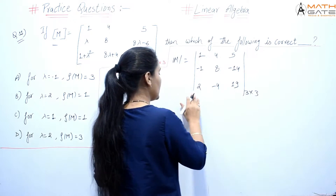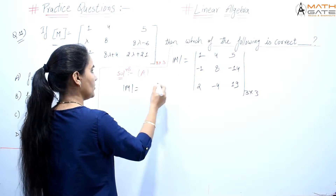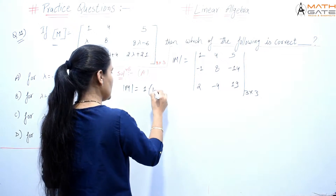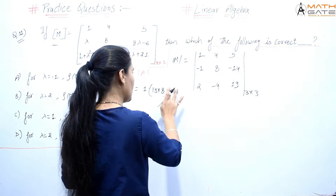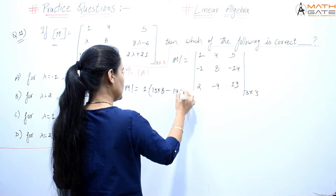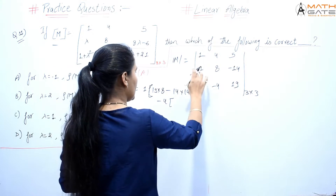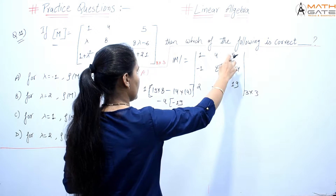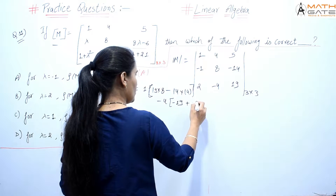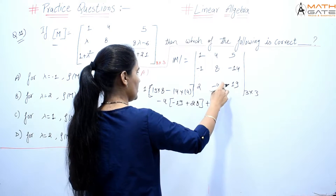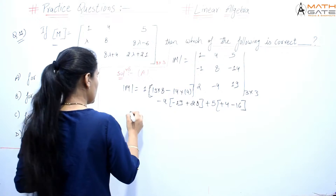For rank 3, the determinant must be nonzero. Let's check: expanding the determinant, we get 1×(19×(−8) − (−14)×(−4)) minus 4×((−1)×19 − (−14)×2) plus 5×((−1)×(−4) − (−8)×2). Simplifying: 1×(−152−56) minus 4×(−19+28) plus 5×(4+16), which gives 1×(−208) minus 4×(9) plus 5×(20).